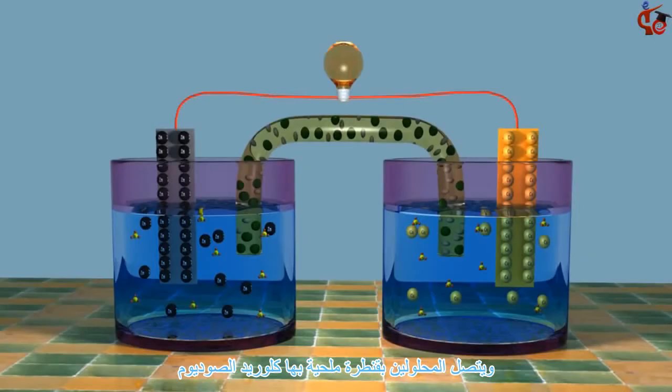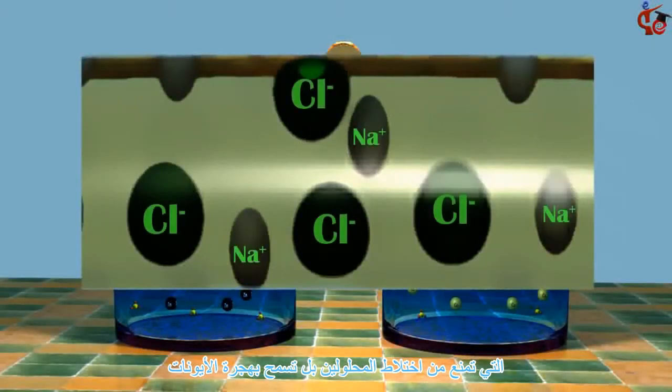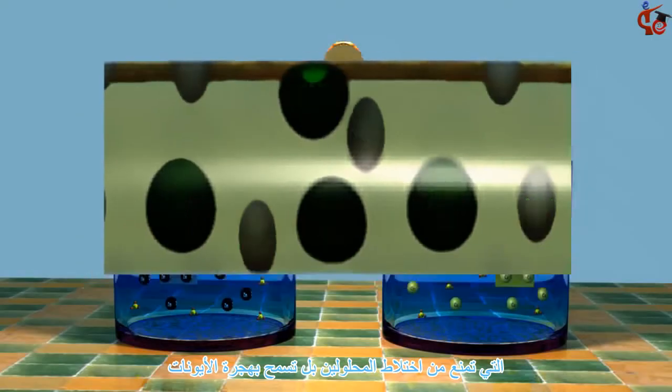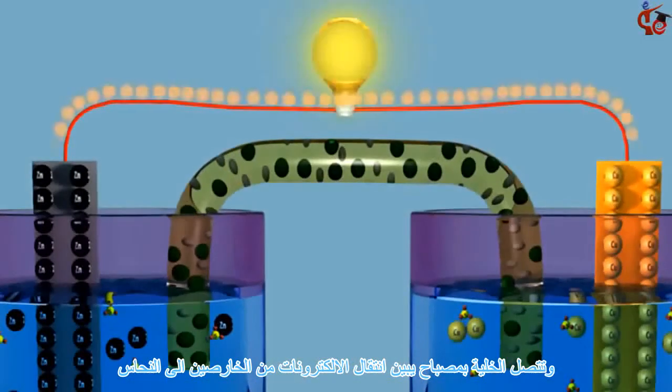The two solutions are connected by a porous sodium chloride salt bridge that prevents the two solutions from mixing but allows ions to migrate. Attaching a cell shows that electrons flow from zinc to copper.